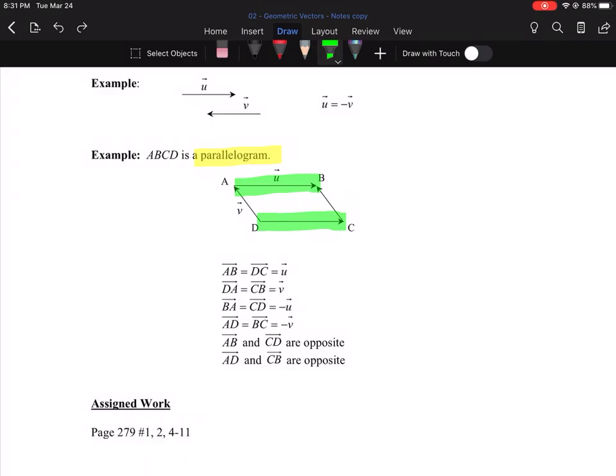Next one, DA. So DA goes this direction here. There it is, DA. And they say DA is equal to CB because it's a parallelogram. They're heading in the same direction and the same length. And those ones were called V in the picture. They are all the same.